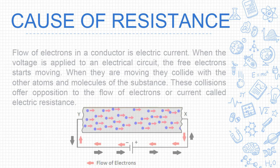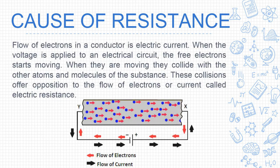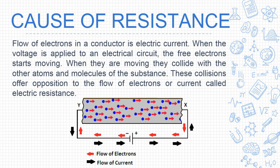Next is the cause of resistance. The flow of electrons in a conductor is electric current. When voltage is applied to an electric circuit, the free electrons start moving. As they move, they collide with other atoms and molecules of the substance inside the conductor.